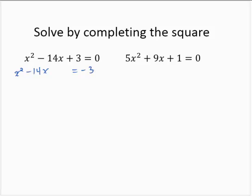Now I'm going to complete the square. To complete the square, we take the b coefficient, which in this case is 14, and we divide it by 2, and we square it. 14 divided by 2 is 7, squared is 49. So I'm going to add 49 to both sides of the equation.